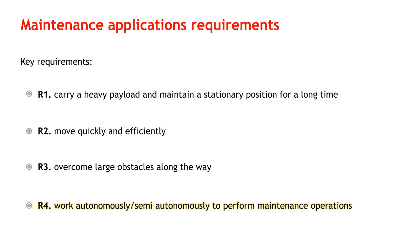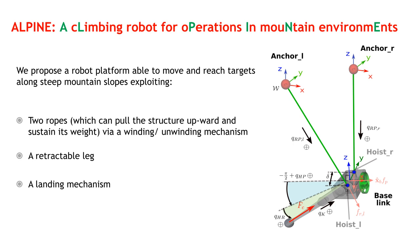Taking inspiration from human climbers, we propose a robotic platform able to move and reach targets along steep mountain slopes. The robot will move by using the combined action of two ropes attached to the top and a prismatic leg that can be extended and retracted very quickly. The leg is used to make the robot jump by pushing it quickly away from the slope, while the ropes are wound and unwound to control the motion during the flight phase.